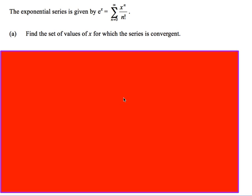We're going to have a look at a few questions on the radius of convergence and intervals of convergence. The first question: the exponential series is given by e to the power x equals the sum from n to infinity of x to the n all over n factorial. We need to find the set of values for x for which the series is convergent.